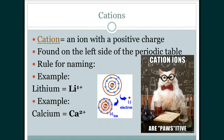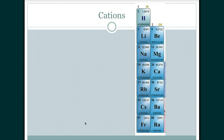The way we name cations is simply to give them the name of the element. So a lithium cation is called lithium, and a calcium cation is called calcium. Lithium has a charge of +1 and calcium has a charge of +2. To figure out what charge your element will have — for metals like alkali and alkaline earth metals — you look at how many electrons are on the outer shell.